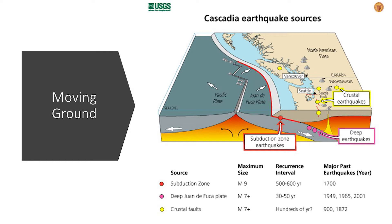Since about 1870, there have been 15 large earthquakes to shake the state. Native Americans who lived in the Puget Sound for thousands of years have oral stories that talk about large earthquakes and tsunamis.